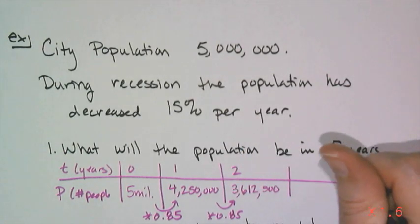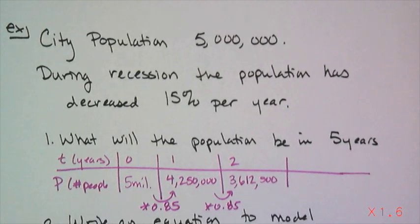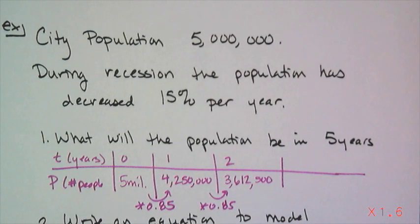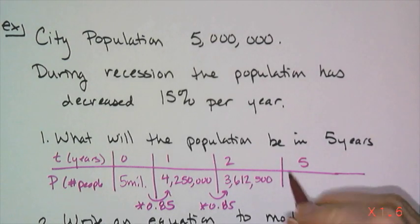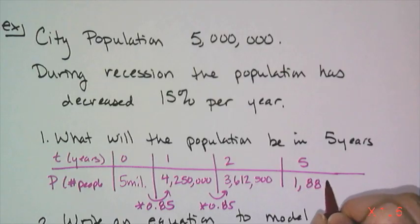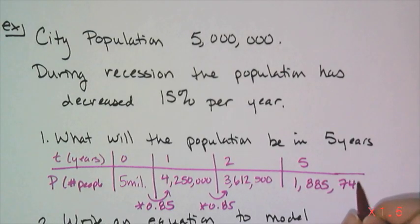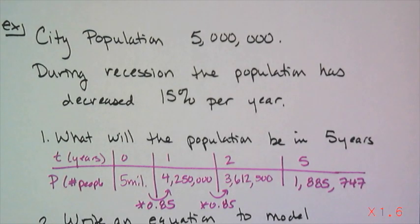Now I'm running out of space, which means I can't continue doing this year per year, but I can think about what's happening in the relationship. I am repeatedly multiplying by 0.85, which means that's my multiplier. In five years, I have to multiply by 0.85 five times. I take the 5 million and multiply it by 0.85 five times. At the end of five years, I'm going to get 1,885,747 people remaining.